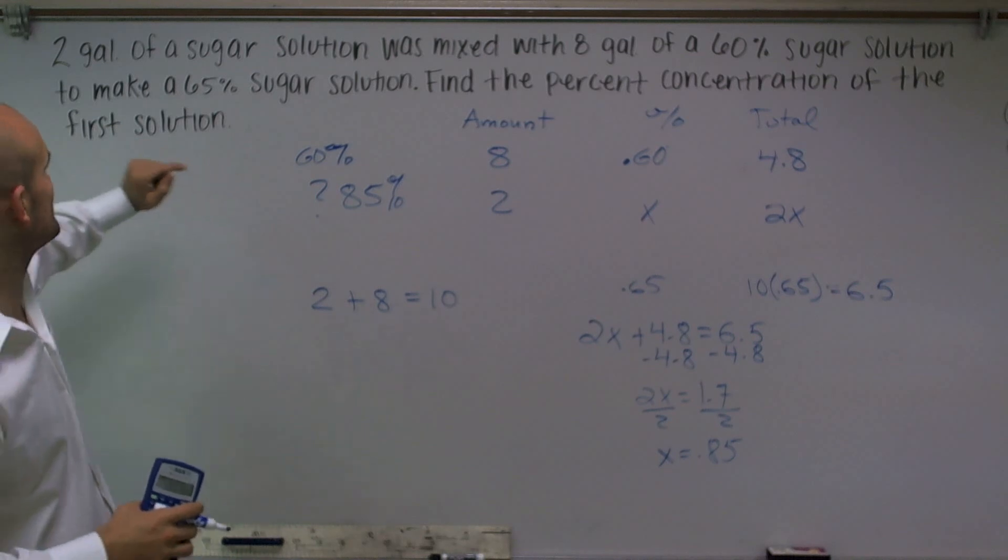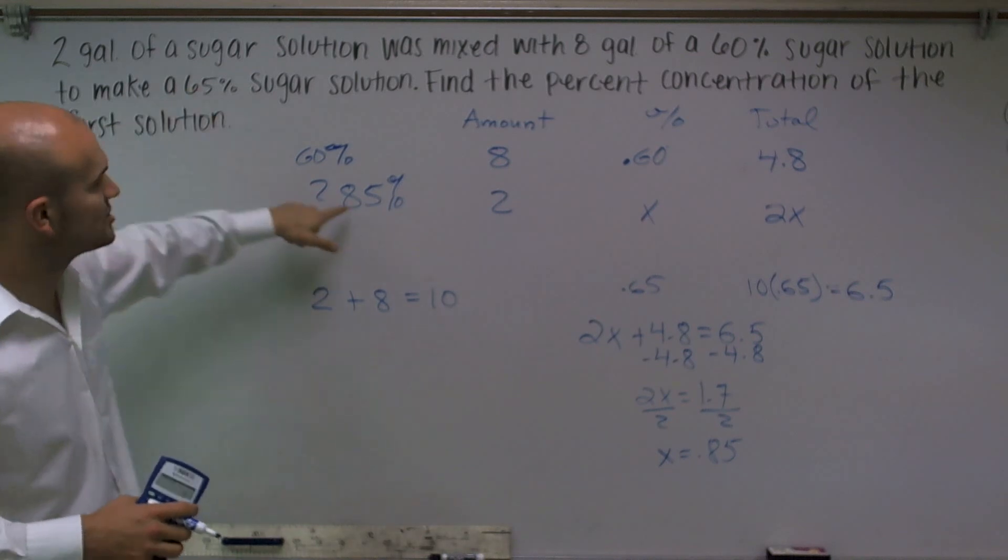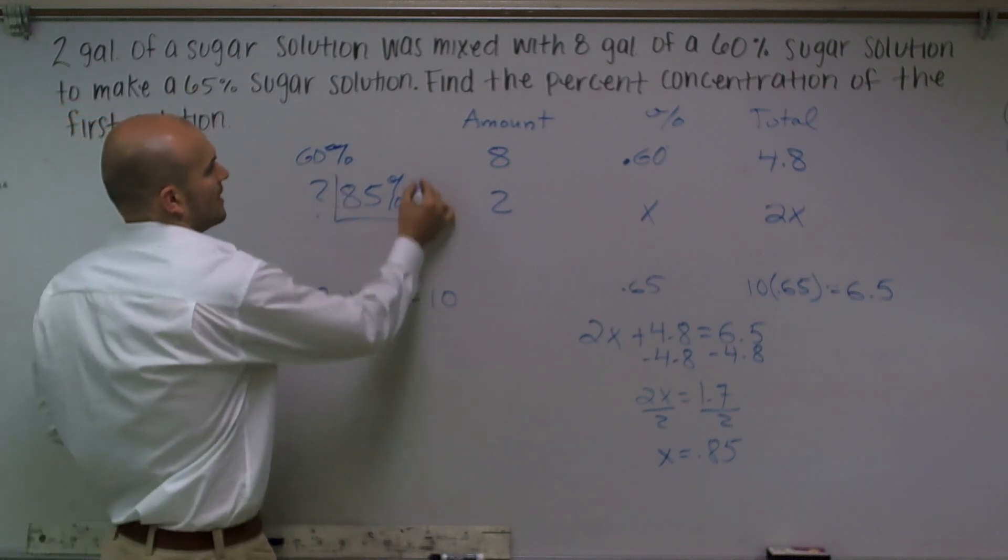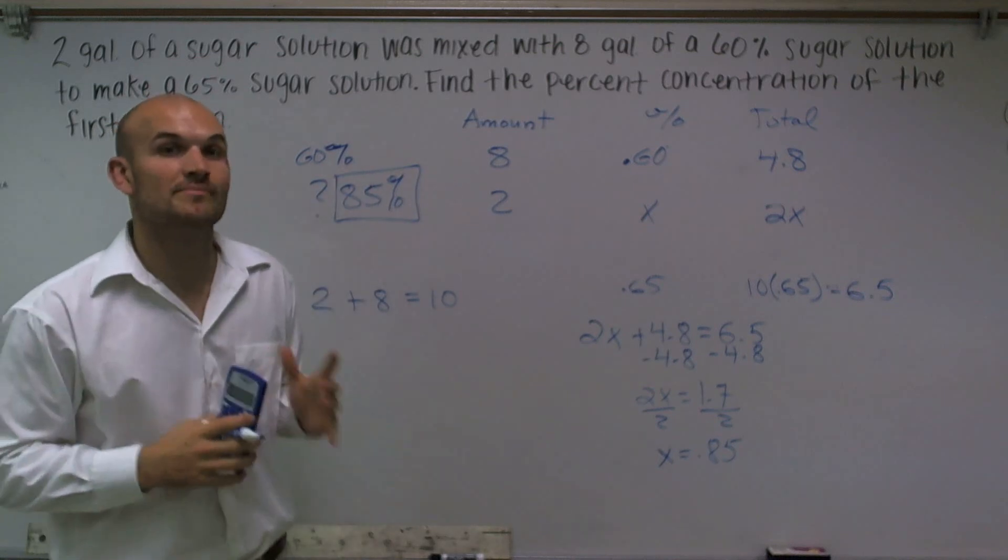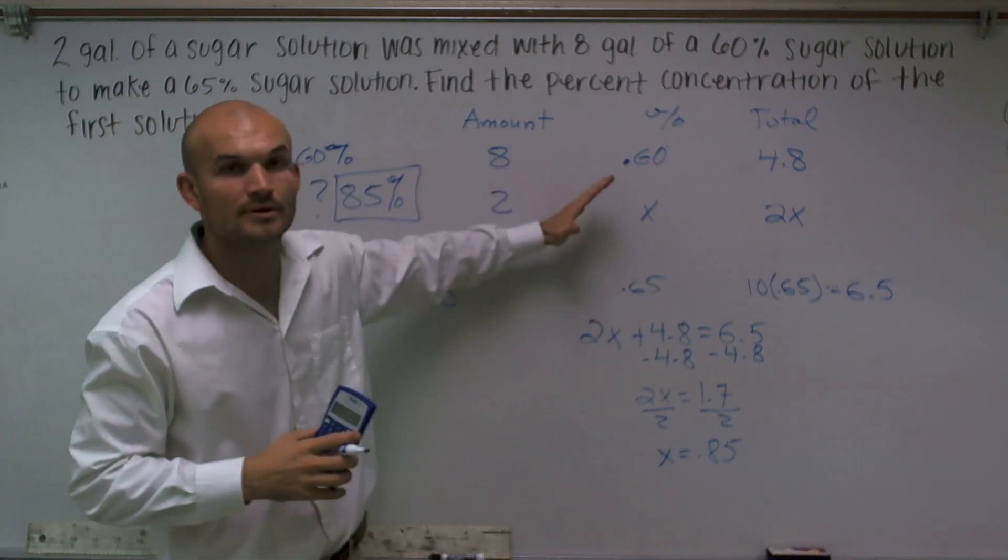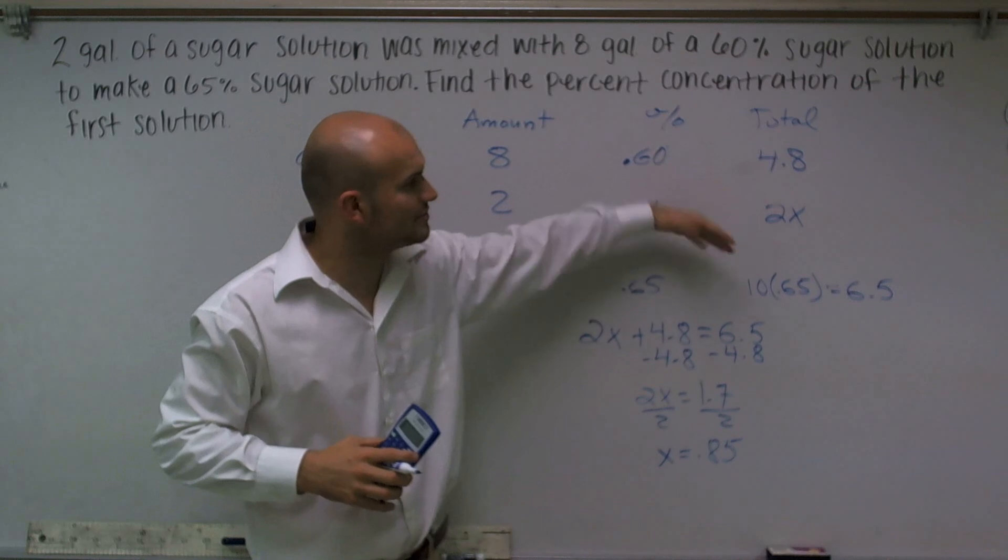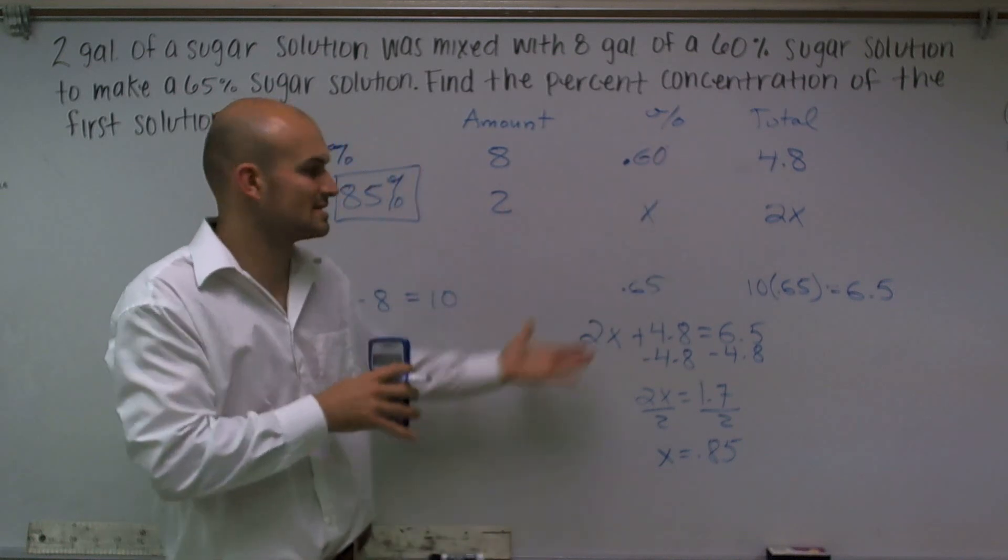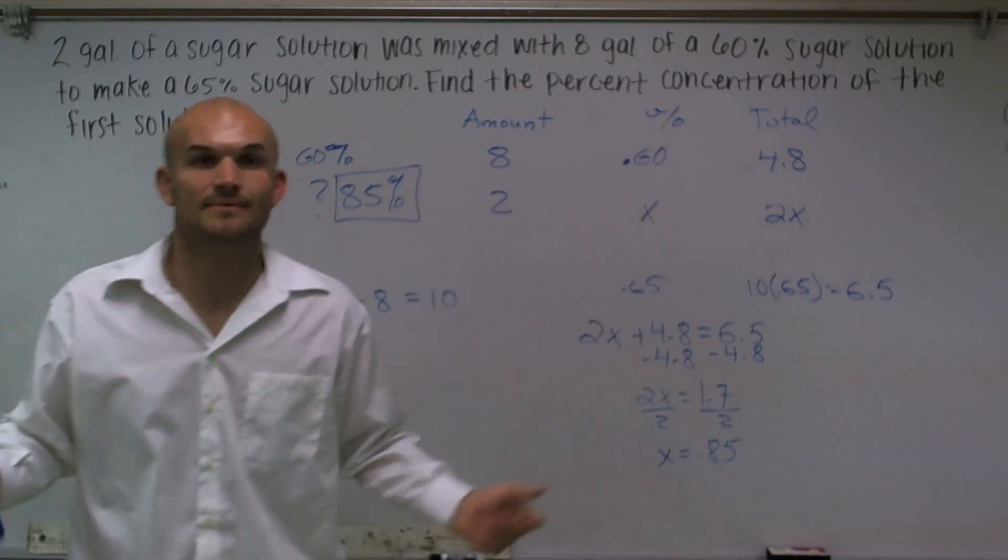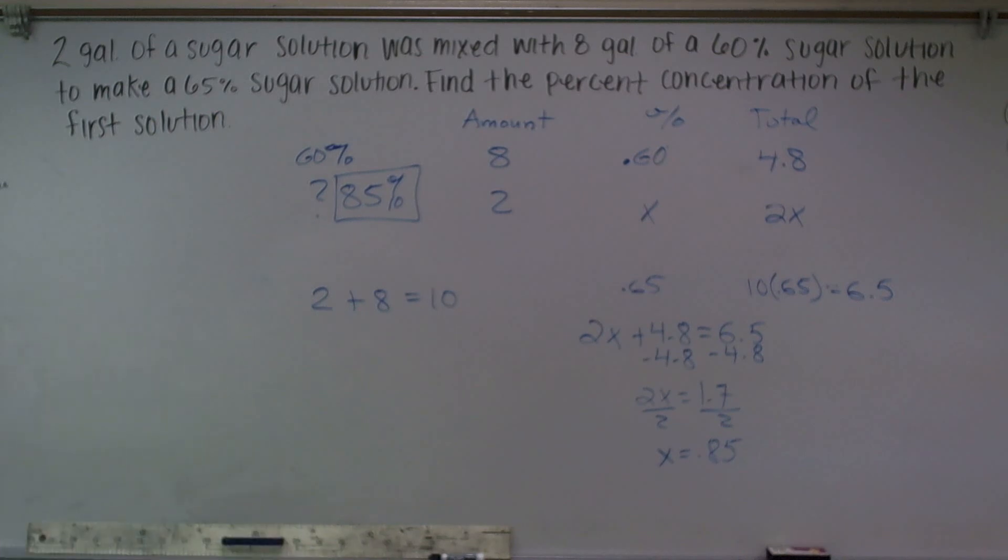Therefore, the percentage of the first solution is going to be 85%. And that, ladies and gentlemen, is how you solve that mixture problem. Make sure you set it up and then all we really got to do is take your words and organize it so we can write our equations. And that's it.